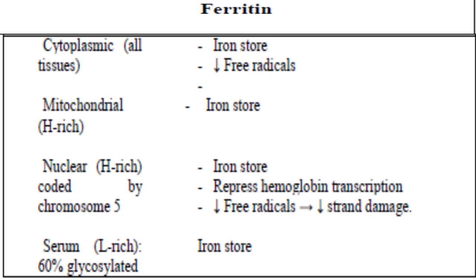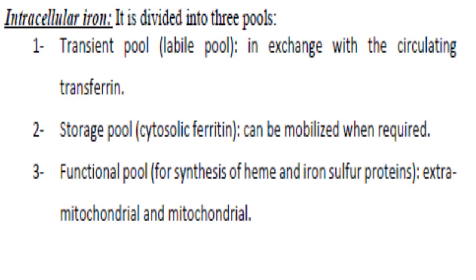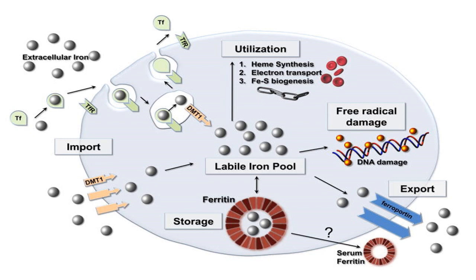Ferritin types differ according to their sites and content of H and L ferritin. The cellular iron content divides into storage, functional, and transient pools. The storage form is cytoplasmic ferritin; the functional form includes hemoglobin and iron-containing enzymes. The transient iron pool is in steady exchange with iron in the circulation.